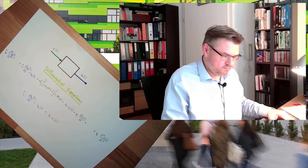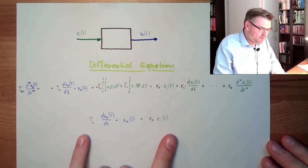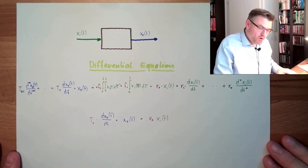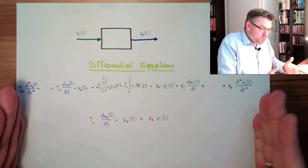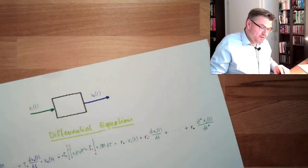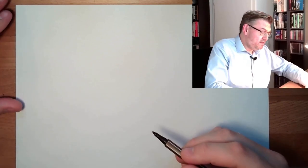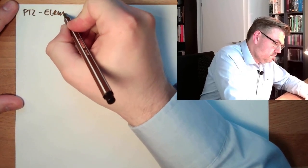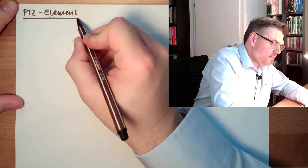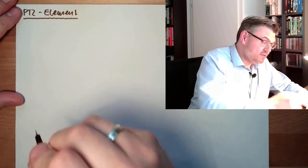Starting from the differential equation we derived earlier, the PT1 element came from one part of it. Now we take those parts relevant to the PT2 element. The differential equation of a PT2 element has not one but two time constants: T2 squared and T1.